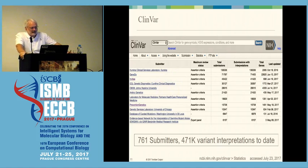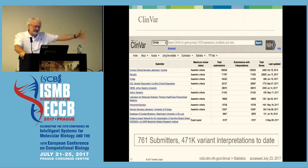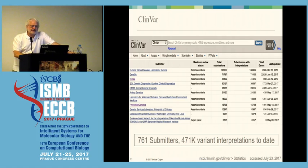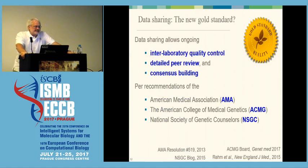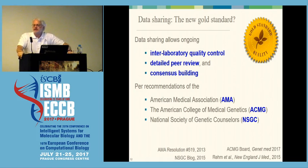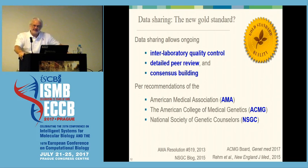Our lab has been among the top five contributors to ClinVar pretty consistently for the last few years. We're joined by a number of other excellent laboratories as well. There are currently 761 submitters and almost a half million clinical variant interpretations in this public resource right now. We think this is important because it allows inter-laboratory quality control, detailed peer review, and building consensus where we disagree — in a way no other resource, including the published literature, allows. That is the recommended practice from a number of important medical organizations, including the AMA, the ACMG, and the NSGC.